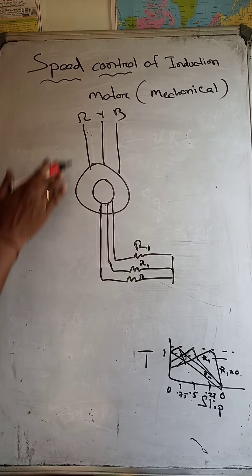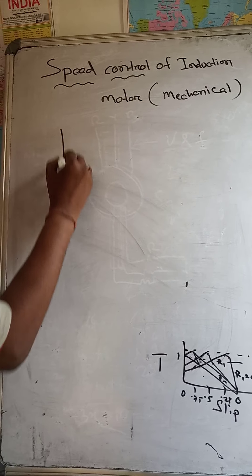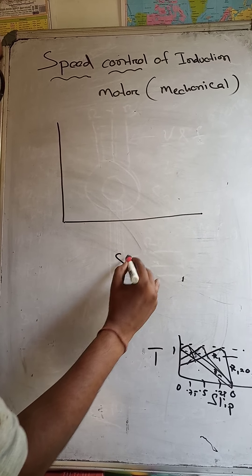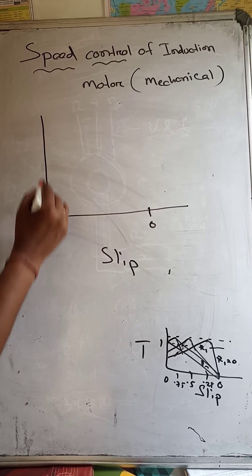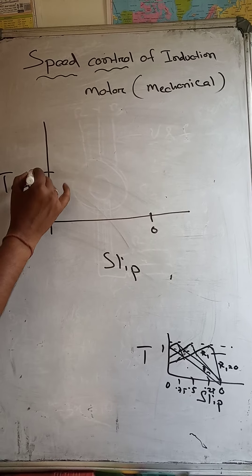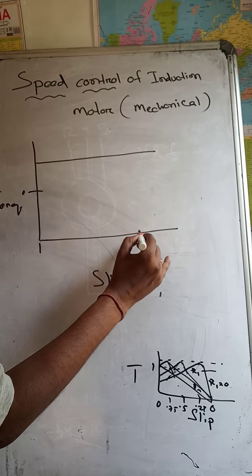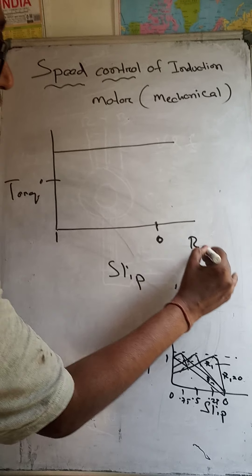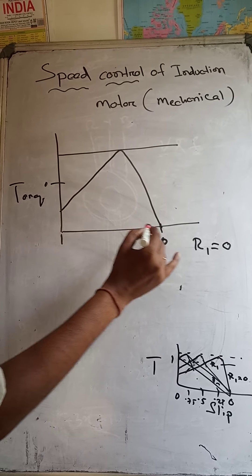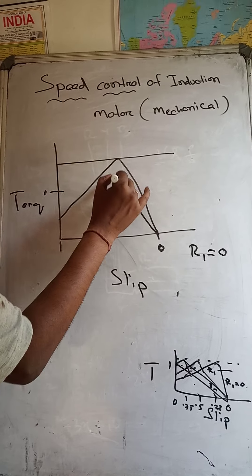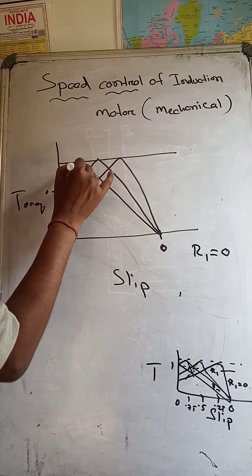What is the graph between torque and slip? On the graph, slip is zero here and slip is maximum here. Torque is maximum at a certain point. When resistance R1 is zero, the torque-slip curve looks like this. If you add some resistance, the curve shifts like this. If you add another resistance, the graph changes again.